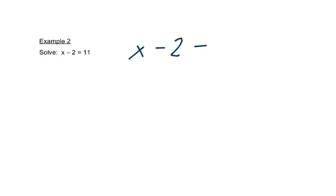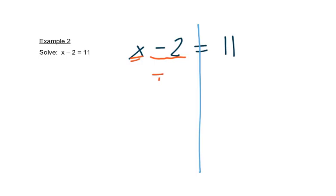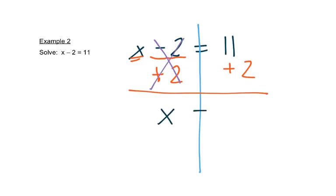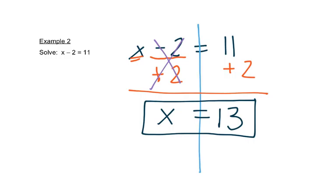Now let's look at solving it — let's figure out what will make this be true. We're trying to find something minus 2 equals 11. Well, 13 minus 2 is 11, so our answer should be 13, but let's look at how we get there. We'll draw a line down through the equal sign so we have our left and right sides. The letter x is on the left, and we see it says minus 2. The opposite operation from minus is plus, so we want to add 2 to both sides. Minus 2 plus 2 gives us 0, which cancels out and leaves us with just x on the left. On the right we get 11 plus 2 is 13. So x equals 13.